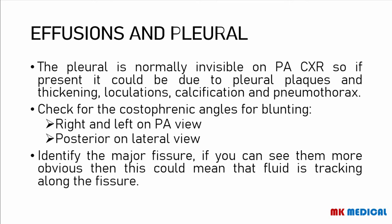You should be able to check for the costophrenic angles for any blunting on the right and left on the PA view, as well as the posterior on the lateral view — they become very sensitive especially when picking up pleural effusions. You should also identify the major fissures. The right lung is divided into three lobes by two fissures: a horizontal fissure and an oblique fissure. The left lung is divided by one main fissure, the oblique fissure. The only fissure visible on a posterior-anterior X-ray is the horizontal fissure, though it's not seen in almost all cases. The oblique fissures cannot really be seen on the posterior-anterior chest X-ray.